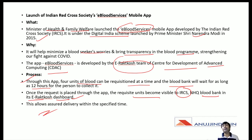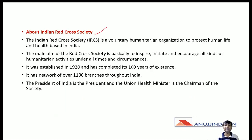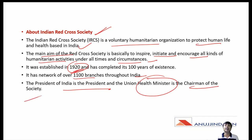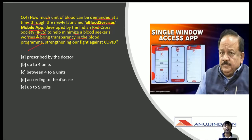This allows sure delivery within the specified time. The Indian Red Cross Society is a voluntary organization established in 1920 to protect human life and health, with a network of over 1100 branches throughout India. The President of India is the president of this society and the Union Health Minister is the chairperson. The correct answer is that up to 4 units of blood can be demanded at a time through this app.